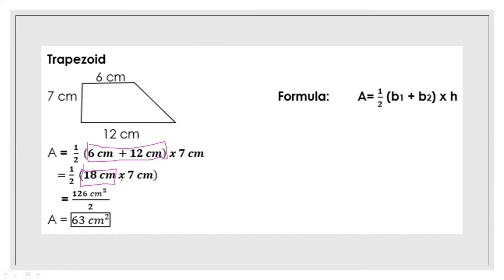After adding, we multiply by the height, which is 7 centimeters: 18 times 7 is equal to 126 square centimeters. Then we divide by 2 — which is the same as multiplying by one-half. 126 square centimeters divided by 2 is equal to 63 square centimeters. So the area of the trapezoid is 63 square centimeters.